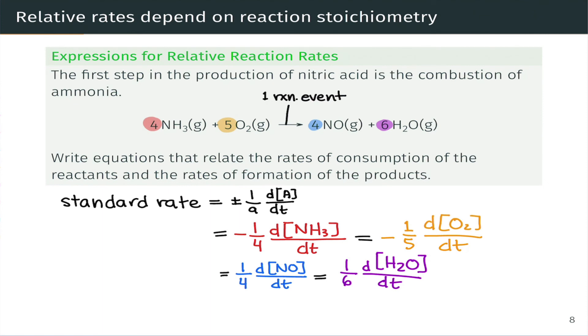These four expressions can be rearranged to relate the different rates of production and consumption in different ways. For example, we could multiply through by one of the coefficients to just look at its rate of consumption or production as a function of the others. Once we have these expressions written down, we can manipulate them mathematically however we need to determine what we'd like to determine.